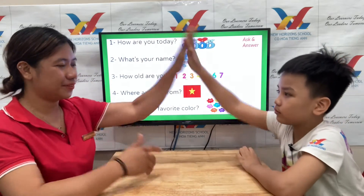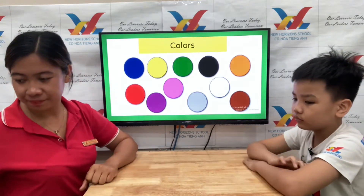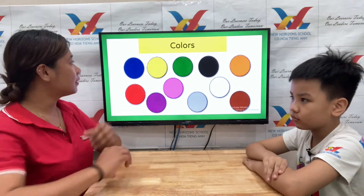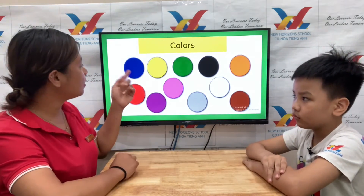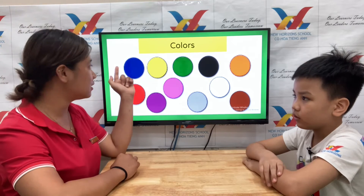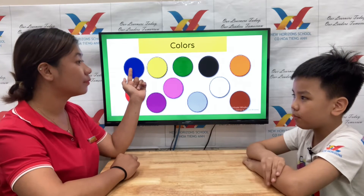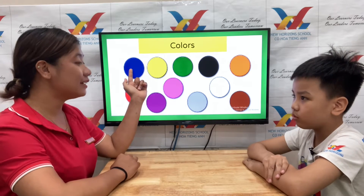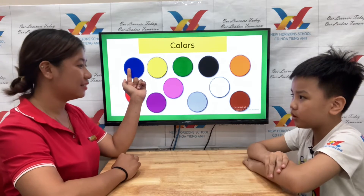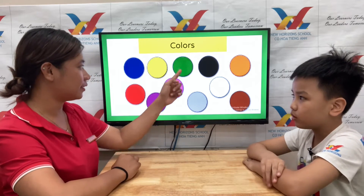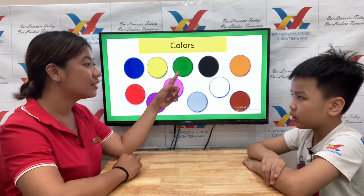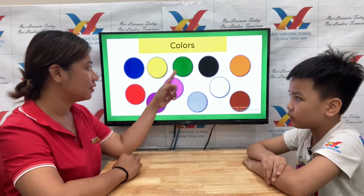Great. Perfect. Okay. Can you tell me what color is this? It's blue. What color is this? It's green.